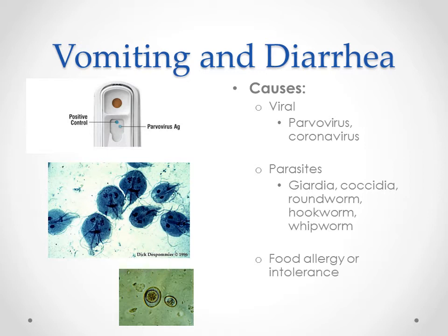Of course, we can have viral causes of vomiting and diarrhea. The worst virus we see causing these symptoms is parvovirus. Parvo essentially wipes out all of those normal lining cells — the villi in the small intestine — which really impairs absorption and impedes digestion. The patient vomits quite a lot and also has significant diarrhea, mostly because of the inability to absorb food. Parvo often results in bloody diarrhea because the lining is sloughing off and going out with the stool.